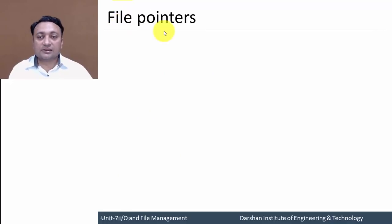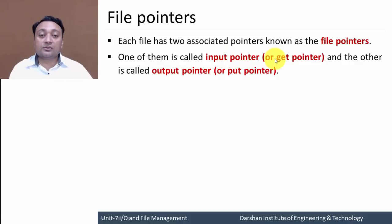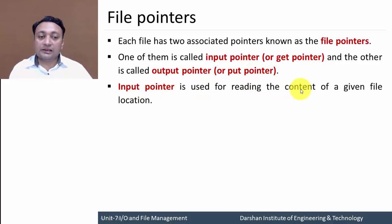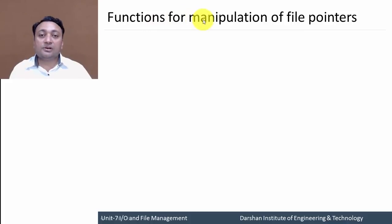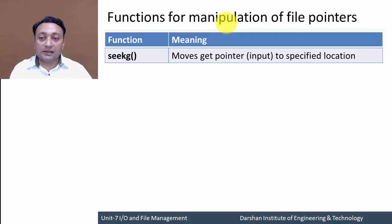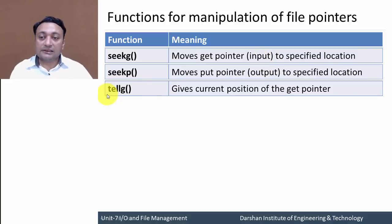Each file has two associated pointers known as file pointers: the input pointer, also called the get pointer, and the output pointer, also known as the put pointer. The input pointer is used for reading the content of a given file location, and the output pointer is used for writing to a given file location. We have several file manipulator functions: seekg moves the get pointer to a specified location, seekp moves the put pointer to a specified location, tellg gives the current position of the get pointer, and tellp gives the current position of the put pointer.